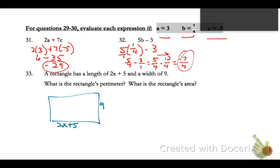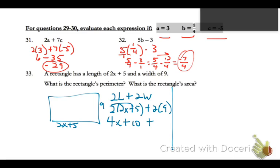Remember in that earlier problem with perimeter, it's 2 times the length plus 2 times the width. So 2 times, I'll put in my expression for length, plus 2 times 9. To simplify that, we distribute and get 4x plus 10 plus 18, so 4x plus 28. That's the expression for perimeter.